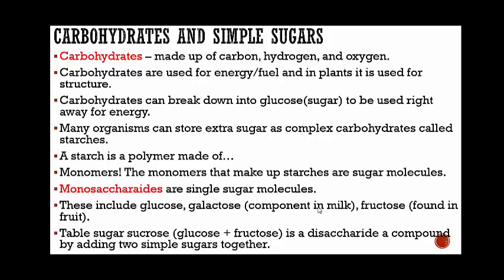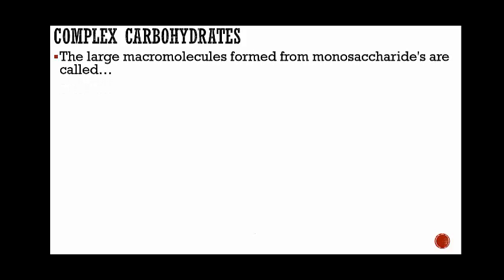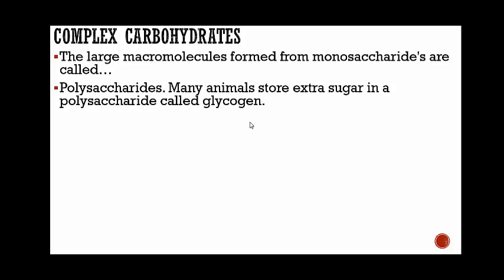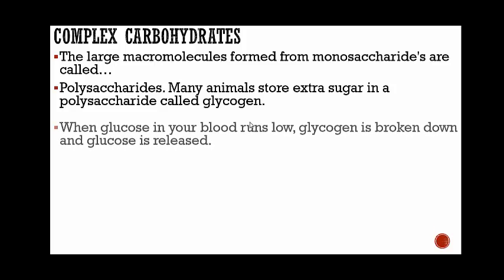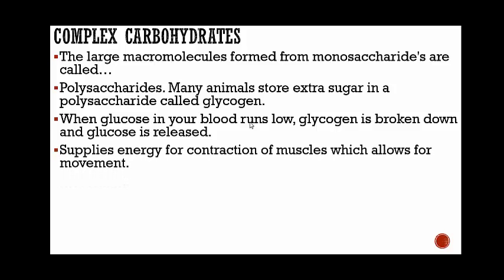A disaccharide is a compound formed by adding two simple sugars together — you take glucose and fructose, combine them, and you get a disaccharide. Complex carbohydrates: large macromolecules (macro meaning large) formed from monosaccharides are called polysaccharides, meaning many saccharides. Many animals store extra sugar in a polysaccharide called glycogen. When glucose in your blood runs low, glycogen is broken down and glucose is released to bring your blood sugar back up, supplying energy for muscle contraction and movement.